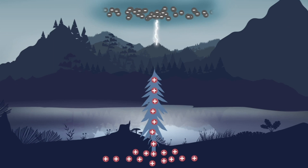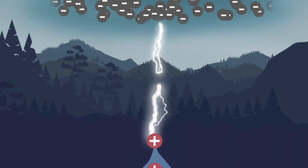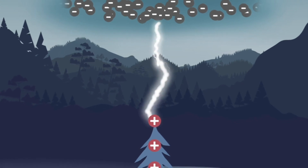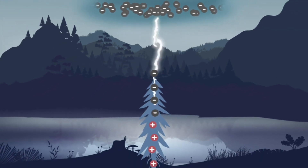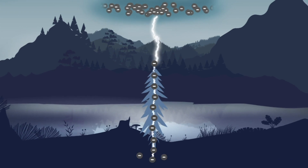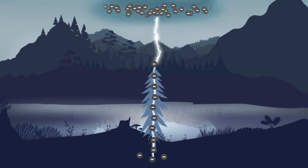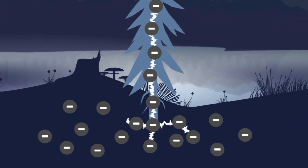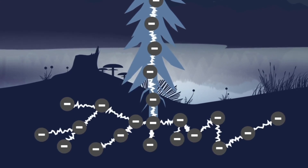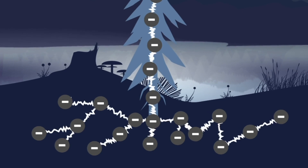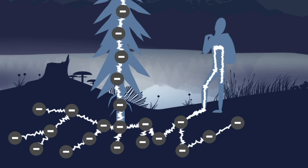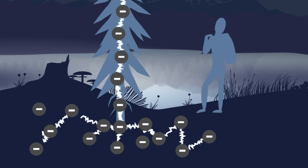The stepped leader induces positive charge channels to rise from tall objects and the ground. When the two channels connect, a massive movement of electrons begins. There's a large drop in resistance along the entire channel and the negatively charged electrons travel down the conduit to the ground. Electrons can travel at a third the speed of light. The electrons then travel away from the strike point in every direction and cause huge voltage differences in short areas called step potentials. These cause more deaths than anything else in the lightning stroke. Electricity can travel up one leg, across the heart, and down the other, creating heart attacks in victims.